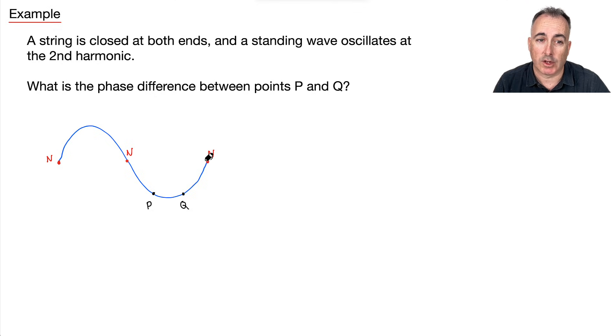Remember the definition: points within a node, from this end to this end, any point from here to here will be in phase. If all the points between here and here are in phase, that must mean P and Q are also in phase. And if they're in phase, it means the phase difference is zero radians.